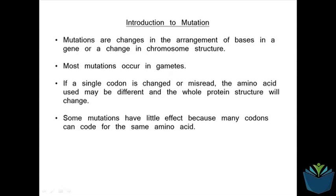Most mutations that happen actually occur within gametes or sex cells, and there are many different types of mutations. If you think about a likely thing that can happen to a set of DNA bases as it is being read or copied, one of those single bases might be misread, and therefore there may be a mistake within the genetic material. This can mean that a different type of amino acid is coded for, and therefore the protein you go on to make isn't the same, because the primary structure isn't the same. We can refer to that as a point mutation, and we will look at some different types in a moment.